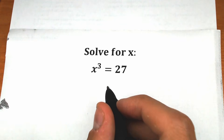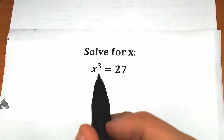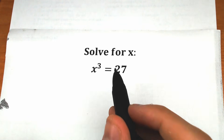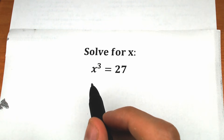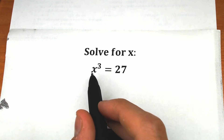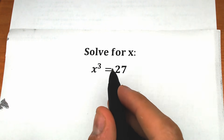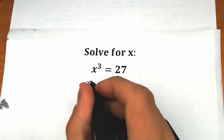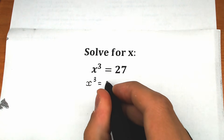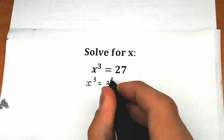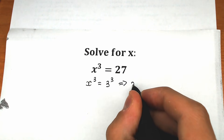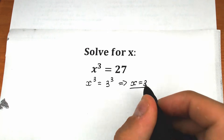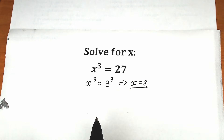Hello everyone, happy to see you here, welcome back to my channel Hire Mathematics. Today we have a really interesting challenge, and a lot of students might be saying, hey mister, this is a very easy challenge — x cubed equals 27. Everyone knows that x cubed equals 3 cubed, and from here x is equal to 3. But in terms of math, we need to know how to solve this challenge completely and step by step.